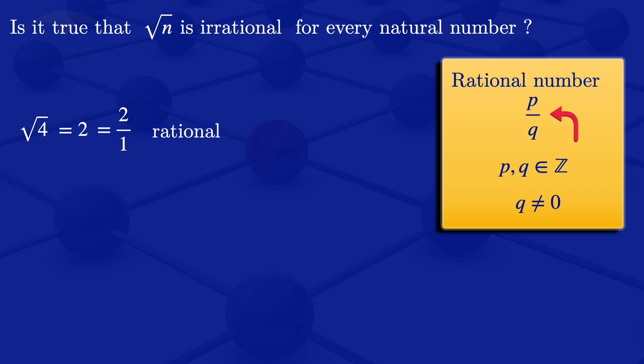Therefore, it is rational and disproves this claim. We therefore write that it is false that the square root of n is irrational for every natural number.